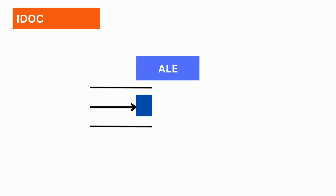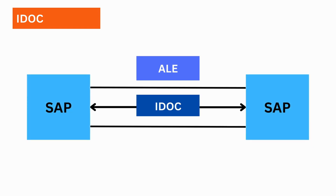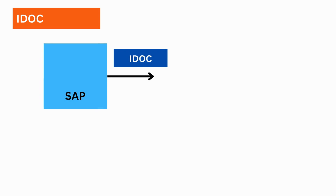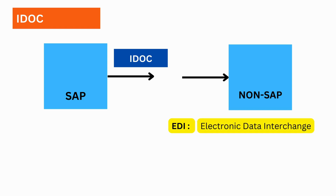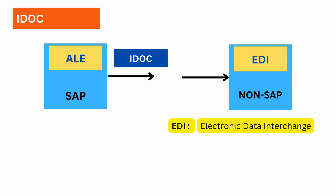Generally, ALE can be used for IDOC exchange between two SAP systems. But when you plan to integrate a SAP system and a non-SAP system for data exchange, you need to use EDI, which stands for Electronic Data Interchange. The difference between ALE and EDI is that EDI technology is used when a non-SAP system is one of the communication channels. ALE communication occurs from the SAP side, and EDI communication happens from the non-SAP side. If the data needs to be exchanged between two SAP systems, then IDOC and ALE technology is sufficient.